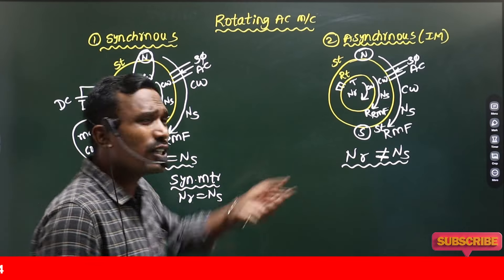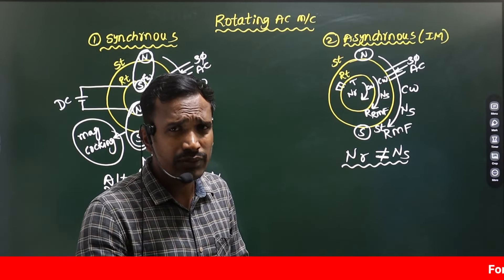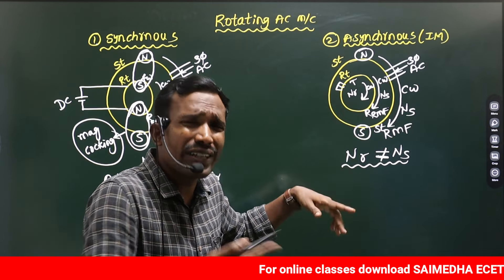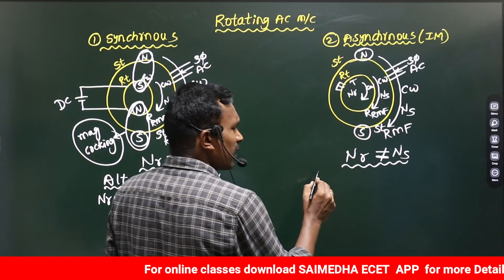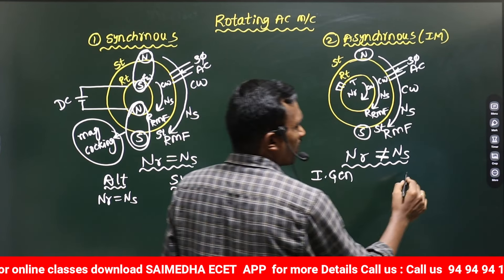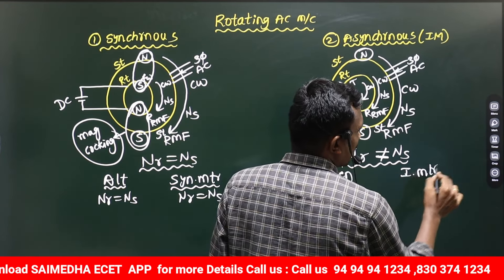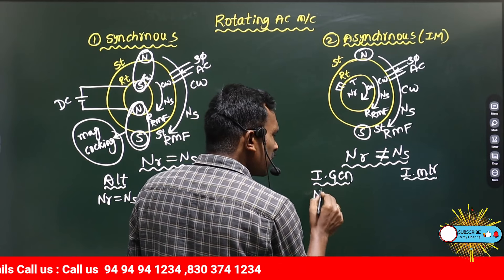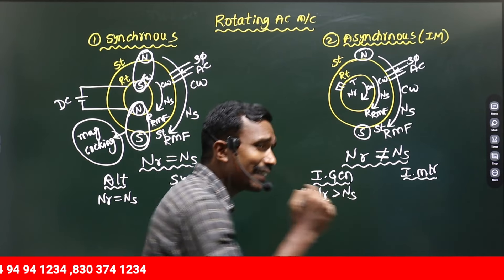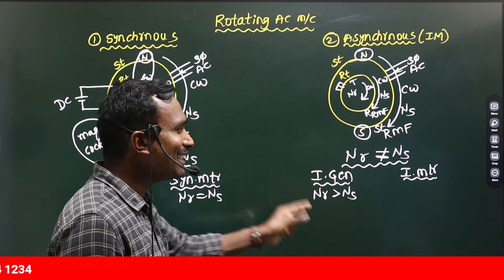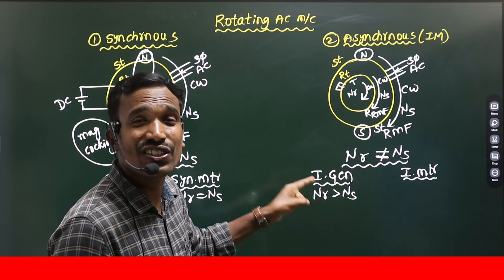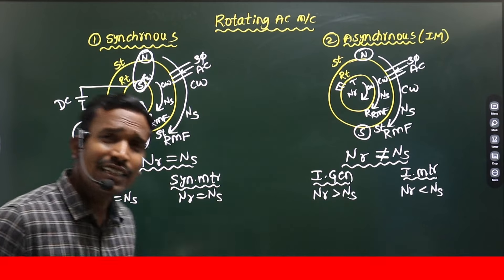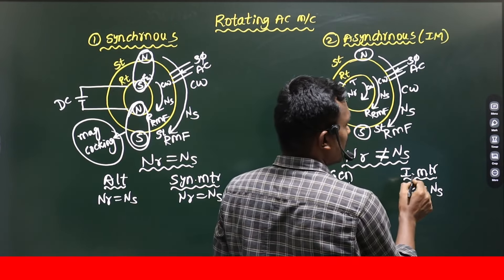For Synchronous machines: rotor speed equals Synchronous speed. For Asynchronous machines: rotor speed is not equal — it can be less or more. We have two modes of operation here: one is called Induction generator and the other is called Induction motor. In the Induction generator, the rotor speed is greater than Synchronous speed. In the Induction motor, the rotor speed is less than Synchronous speed.